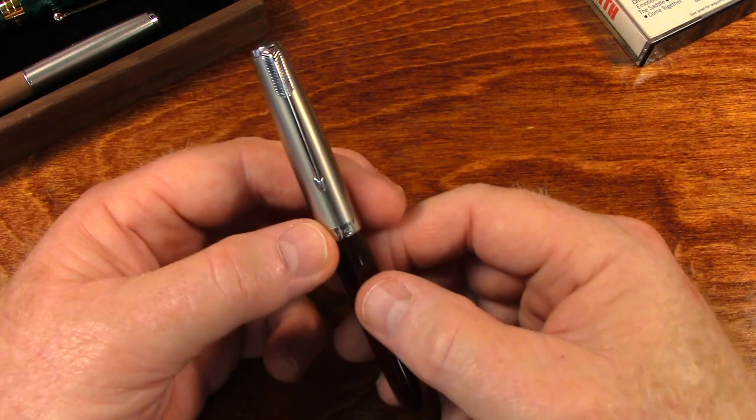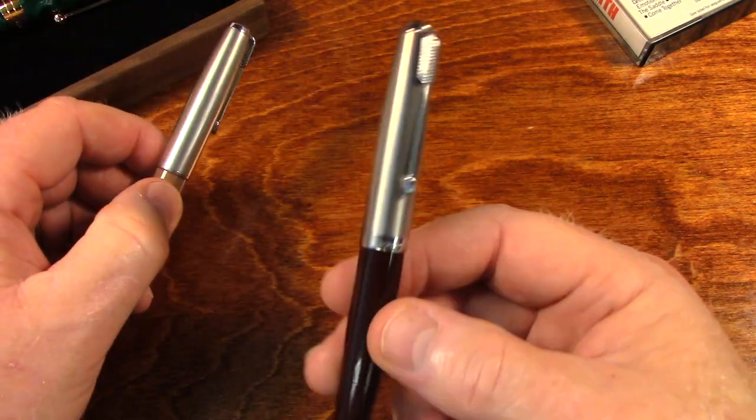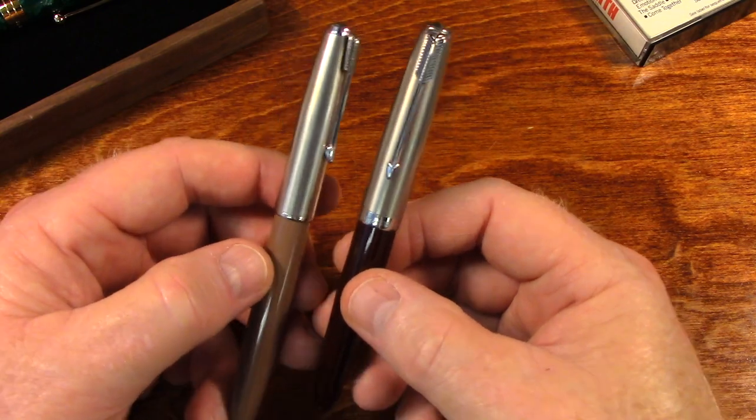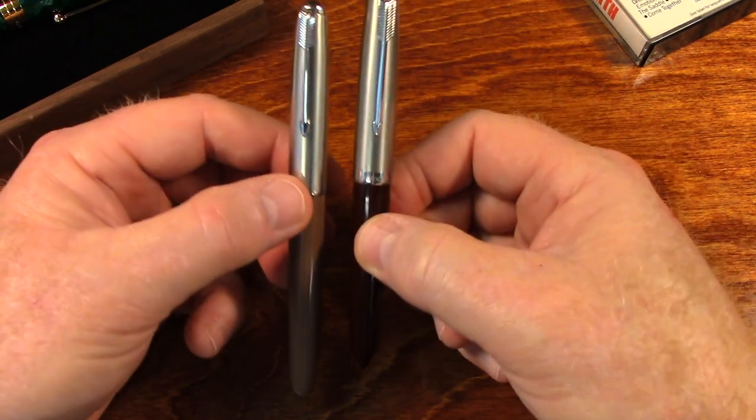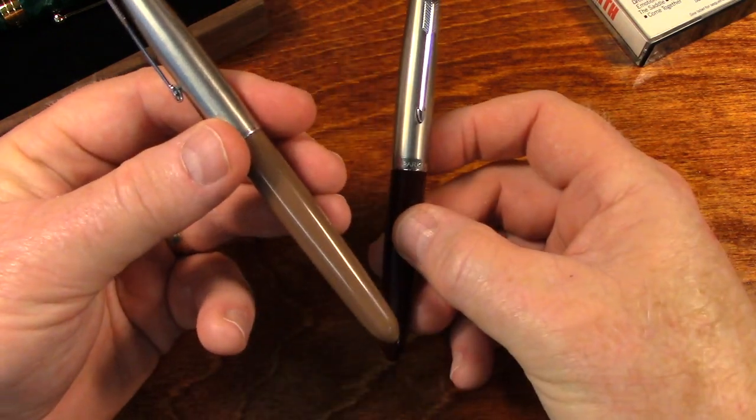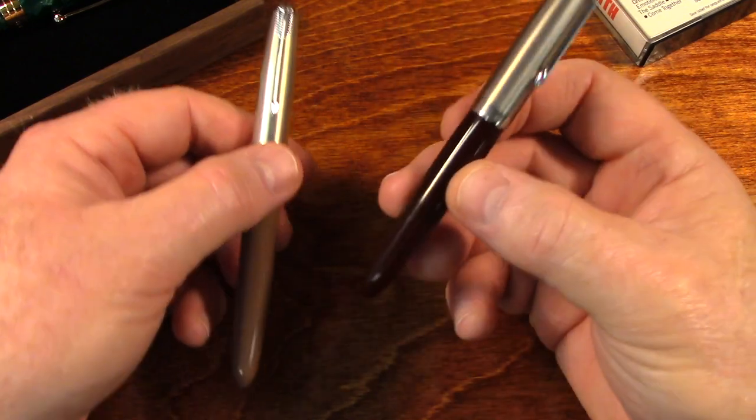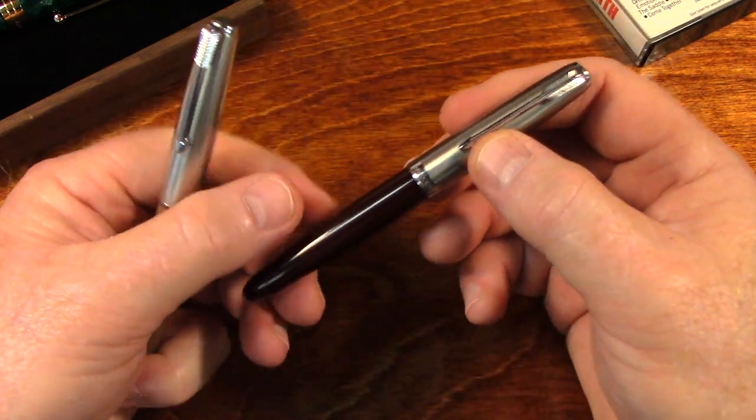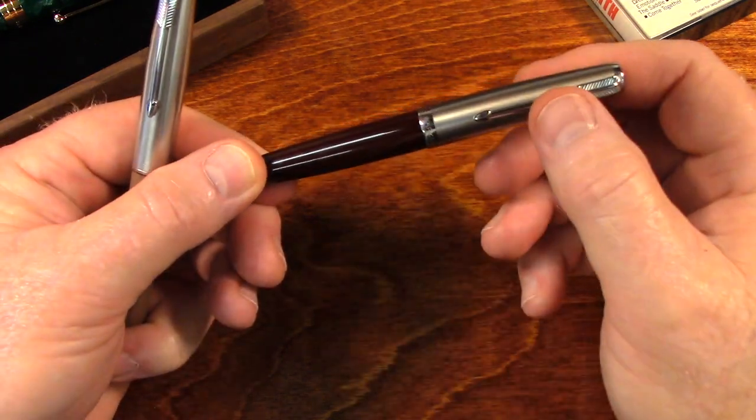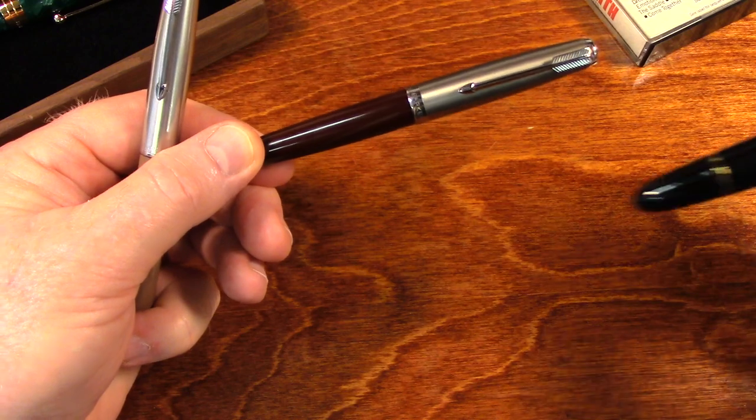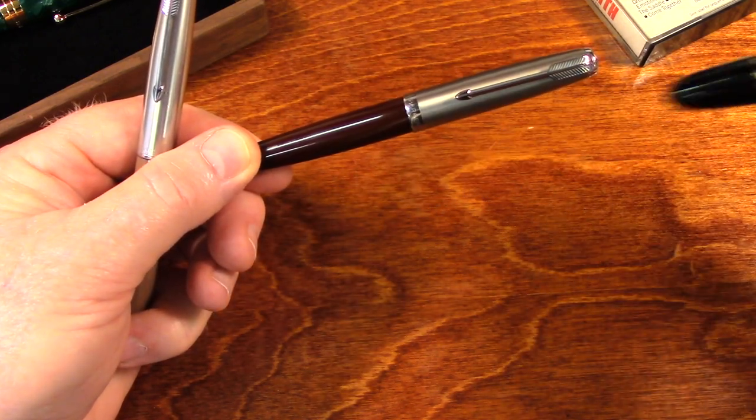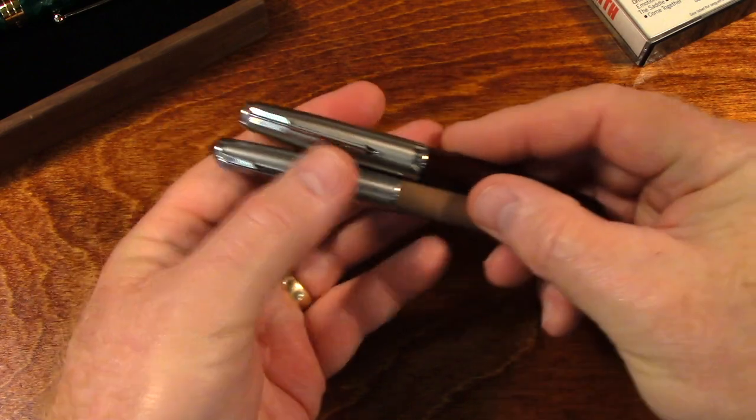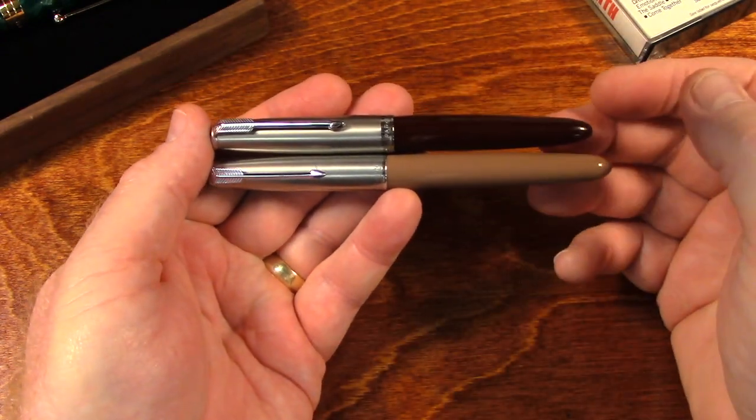This is a Parker 51 also. By the way, this pen was made in 1948. And it's a little bit smaller than the standard Parker. The cocoa colored Parker is the standard. And this color, this brownish color, it may look black in the video, but it's kind of a brown. I can hold a black pen up to it and you can see the difference.